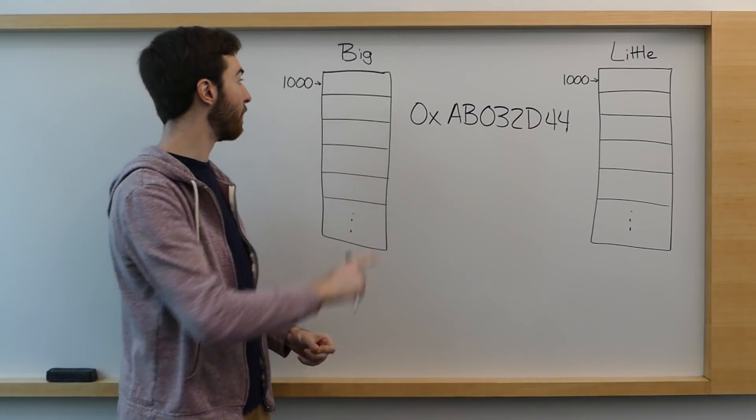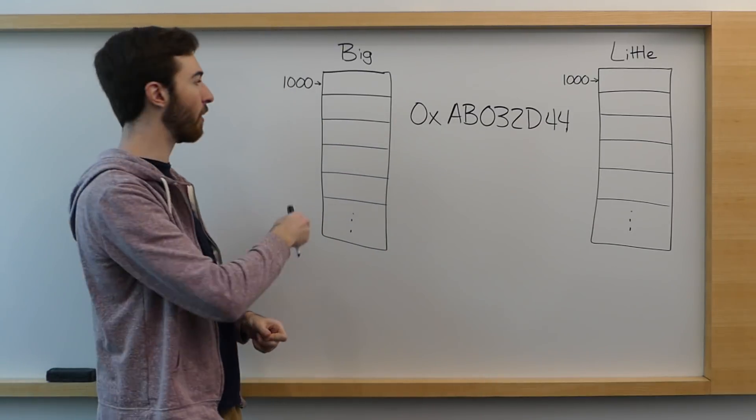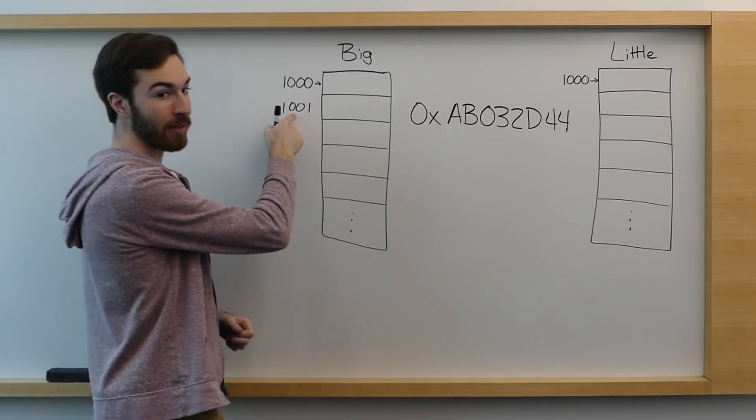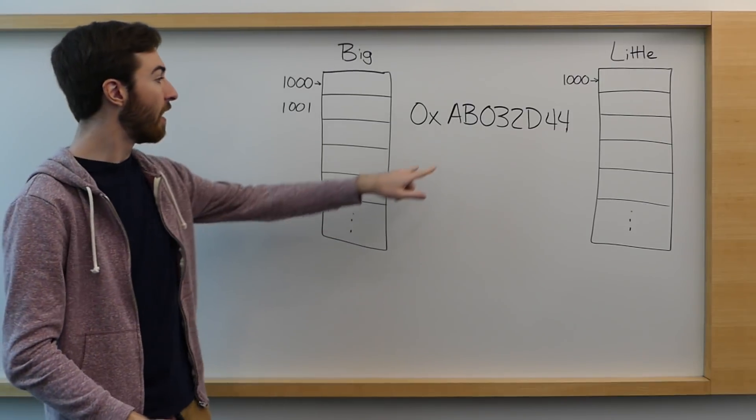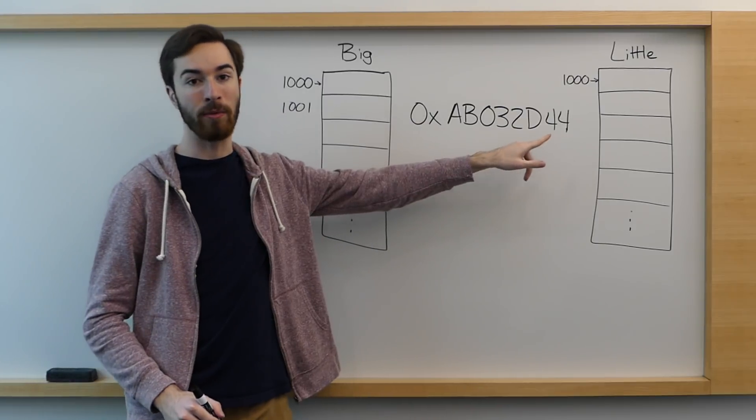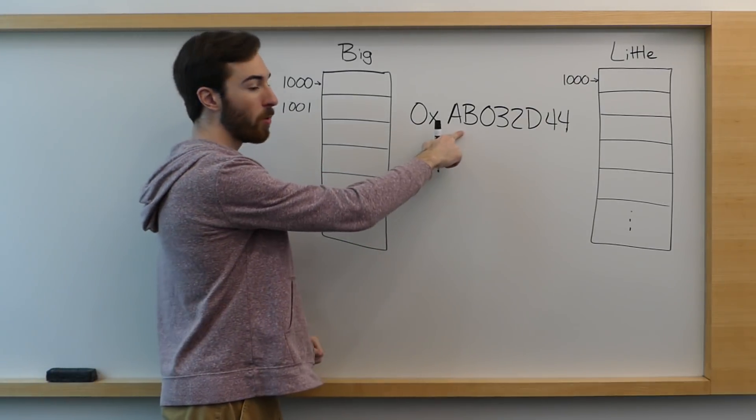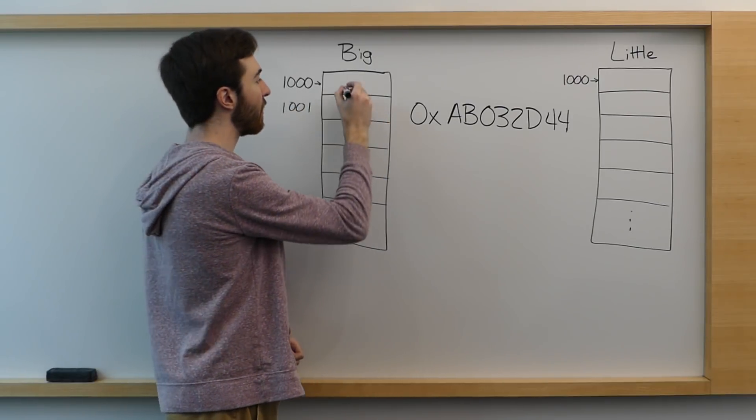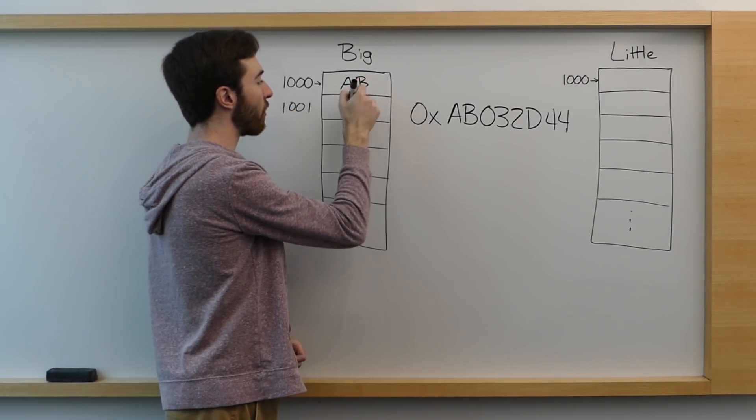In a big endian system, the addresses you can always assume top to bottom increase. This is address 1000, 1001, 1002, etc. In a big endian system, if you're storing an integer like this that is 32 bits long, the most significant bits go in the smallest memory address. So two hex characters correspond to a byte.